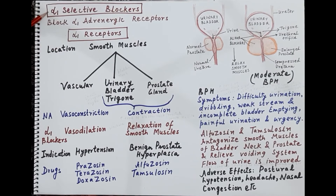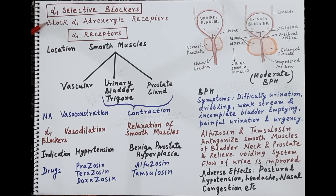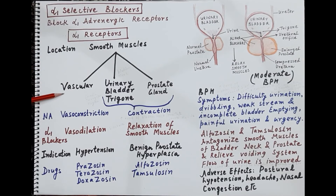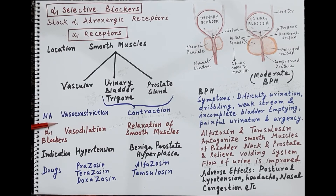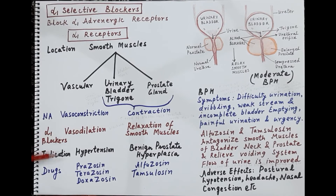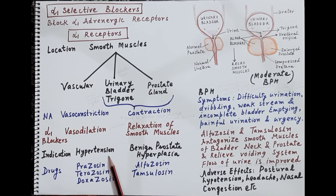Now we will talk about alpha-1 selective blockers — sympatholytics that selectively block alpha-1 receptors without blocking alpha-2 receptors. Alpha-1 receptors are present on the smooth muscles of blood vessels, and adrenaline or noradrenaline causes vasoconstriction. An alpha-1 blocker antagonizes the action of noradrenaline, produces vasodilation, and causes a fall in blood pressure. Therefore, these drugs can be used for the treatment of hypertension.